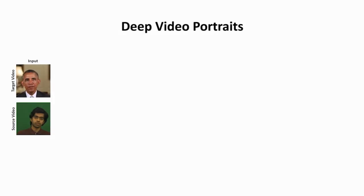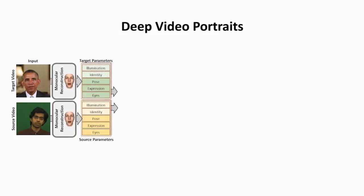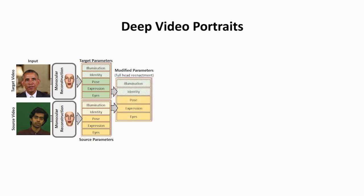Given an input video, we first track the source and target actors using a face reconstruction approach. The resulting parameter vectors represent meaningful semantic dimensions such as the head pose, facial expression and eye motion. These can be directly transferred from the source to the target.